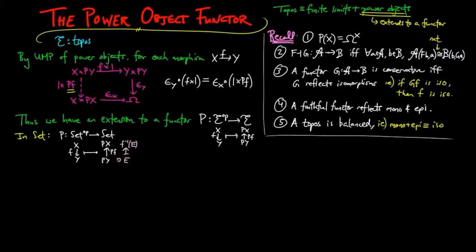A remarkable yet simple fact about the power object functor is that it is its own adjoint, or more precisely, the opposite of P is left adjoint to P.